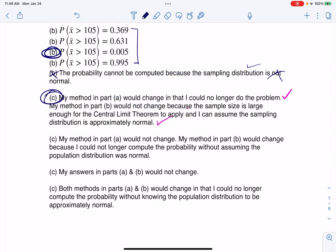If we look at the other options, this next one says my method in part A would not change. That's false. You can no longer do it. My answers in parts A and B would not change. That's false because A would change. Both methods would change in that I could no longer compute the probability. That's not true because B doesn't change. So there are your answers.